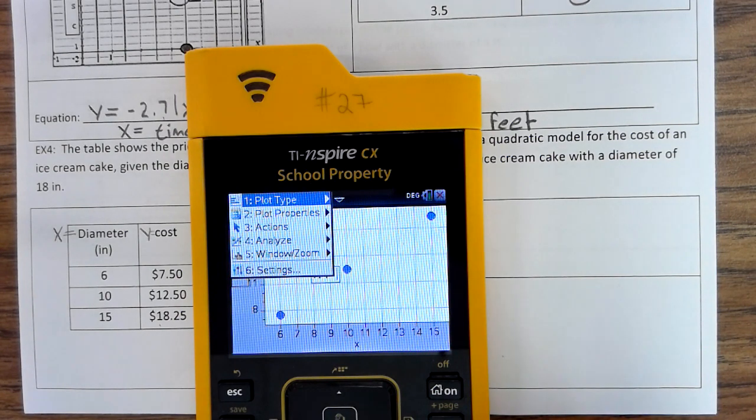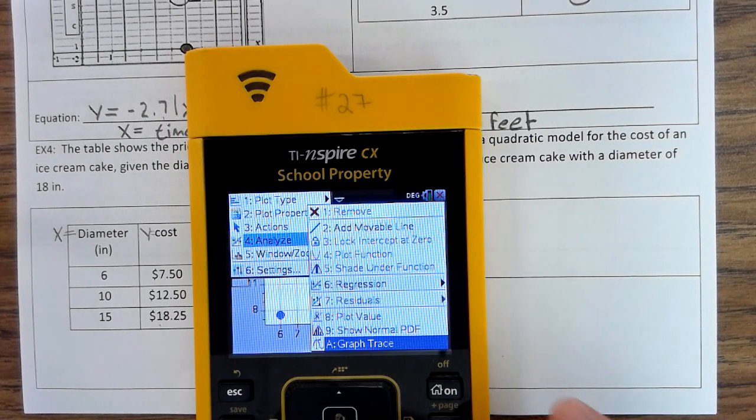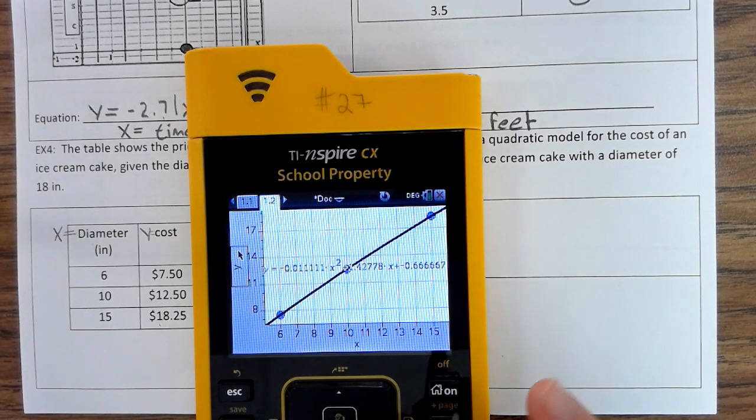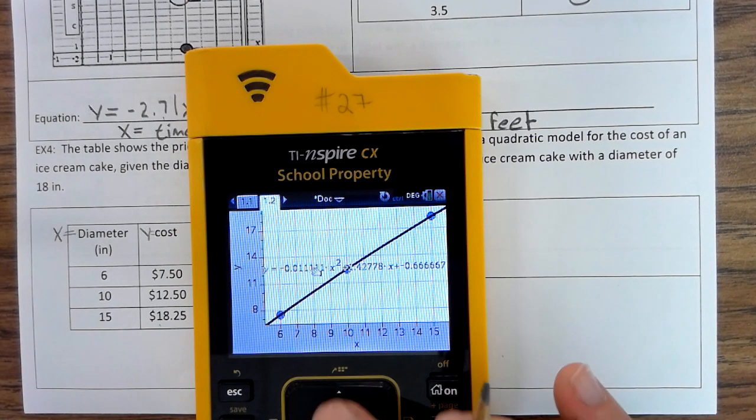If that happens, just go back, menu, analyze, regression, show quadratic. Now, I'm going to control, click on the equation so I can move it down so I can see it.